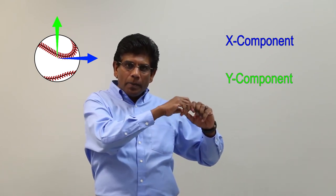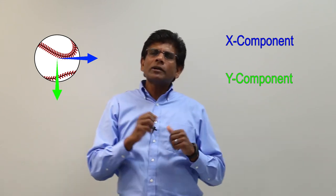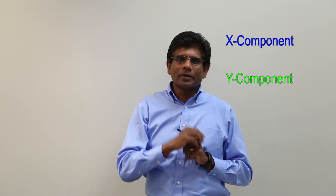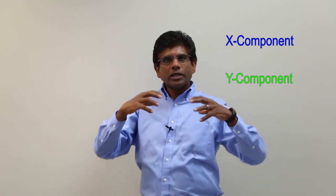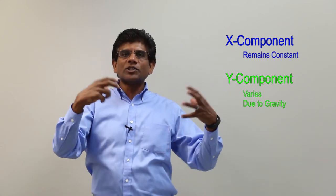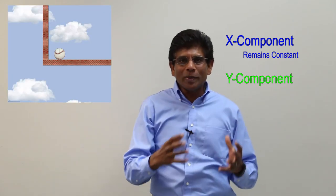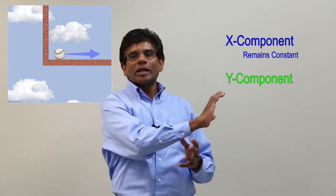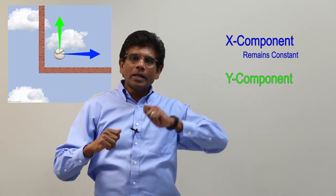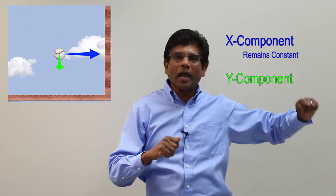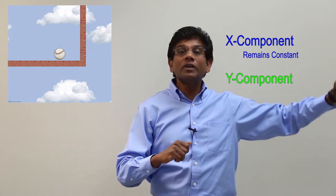The vertical component may be positive or negative, depending on whether the motion is up or down. What about the horizontal component? Since we are not considering air resistance, there is no horizontal acceleration — no change in velocity in the horizontal direction. This means the horizontal component of velocity is constant, and the projected object will continue to have that horizontal velocity component as it falls down and even when it hits the ground.